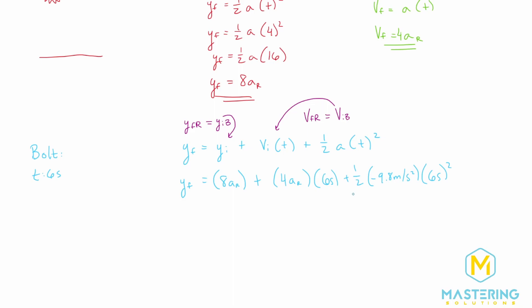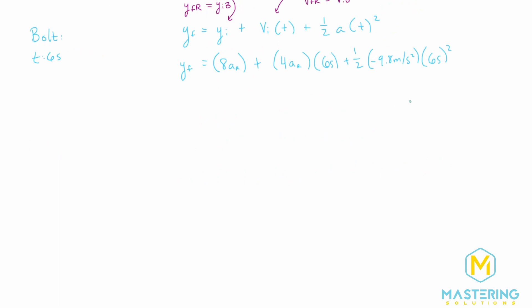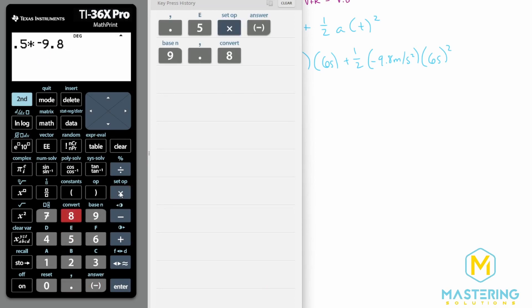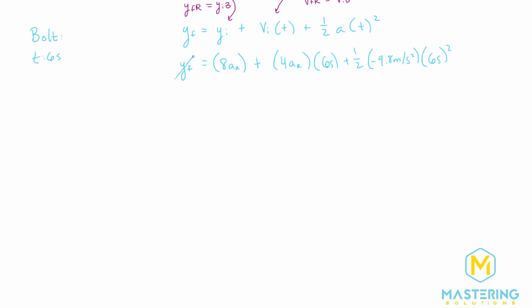We're plugging in values a bit early, but in this case it actually helps. The term ½ × (−9.8) × 6² gives us −176.4. Since the bolt hits the ground, y_final for the bolt is 0. So we have: 0 = 8a + 24a − 176.4. The units work out to meters throughout. Simplifying, 0 = 32a − 176.4 meters.